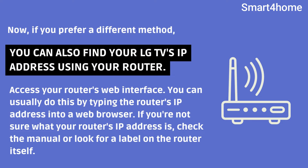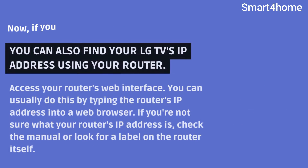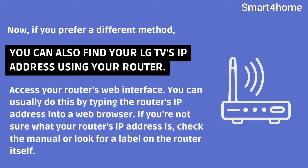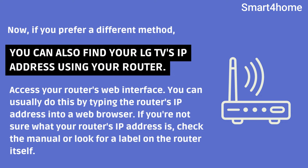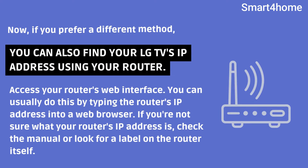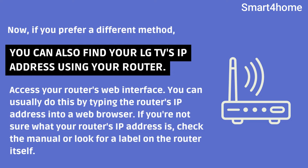Now, if you prefer a different method, you can also find your LG TV's IP address using your router. Let me show you how. Access your router's web interface. You can usually do this by typing the router's IP address into a web browser. If you're not sure what your router's IP address is, check the manual or look for a label on the router itself.